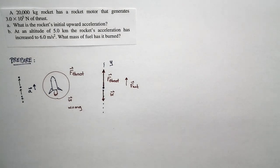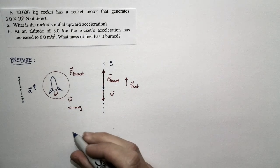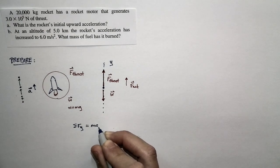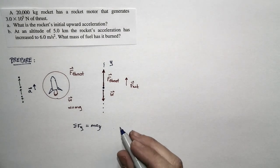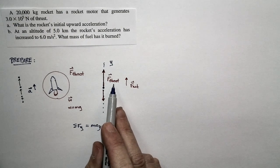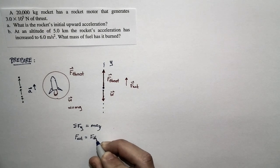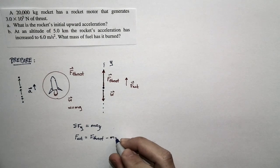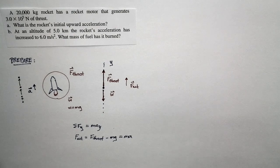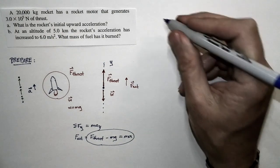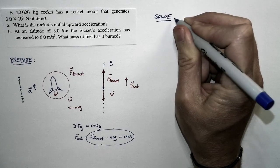Now let's apply Newton's second law to this vertical motion. The sum of the y-components of the forces equals M times the y-acceleration. The y-forces include a thrust force acting upward and a weight force acting downward. So the net force equals the thrust force minus the weight force, and the weight force is just M times G. That gives us: F_thrust minus M times G equals M times A, where A is the rocket's acceleration. This is our basic working equation.